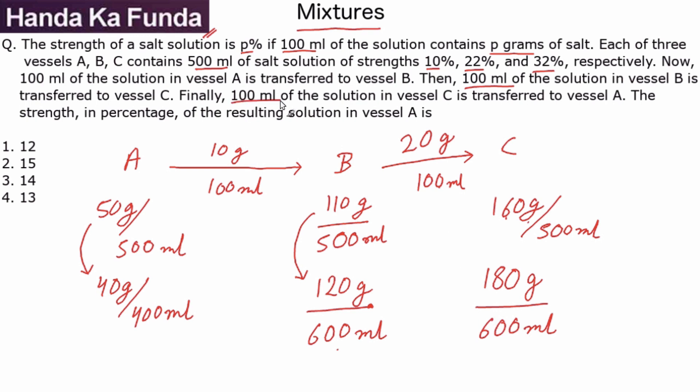Finally there is a third transaction from C back to A. 100 ml once again is transferred. Now when you are transferring 100 ml it is one-sixth, so one-sixth of 600 ml is gone which means one-sixth of 180 grams is gone. So that means 30 grams is gone from C to A.